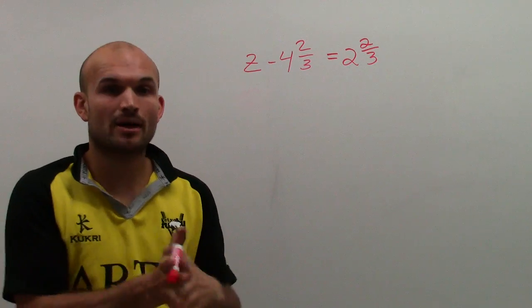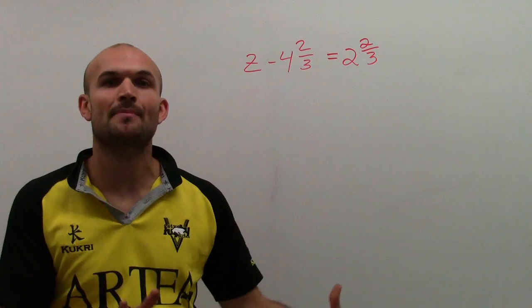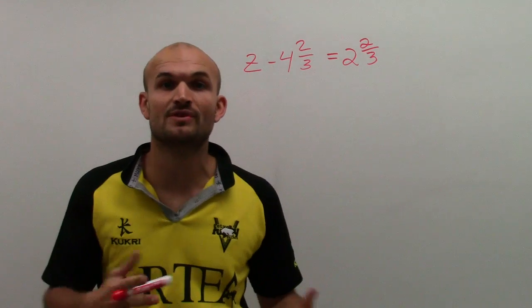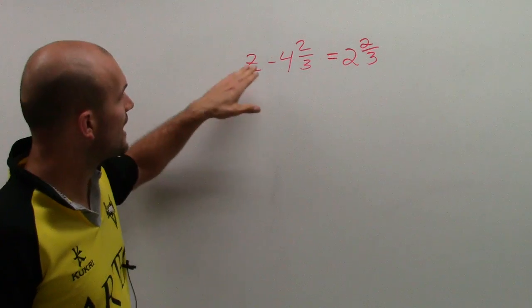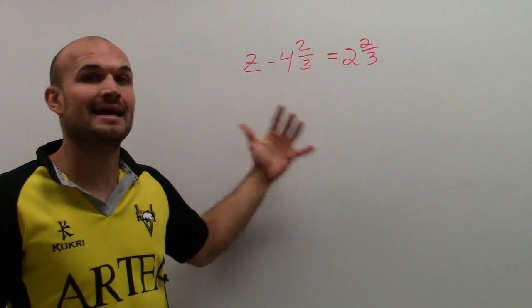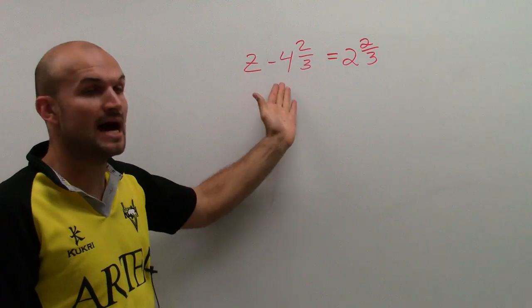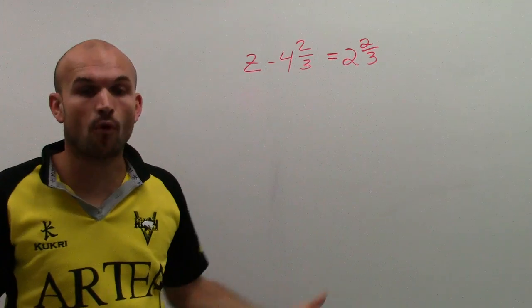It's important for you to understand that no matter what numbers I'm using, the properties or the steps for solving one step equations still remain the same. I look at my variable. I need to isolate it. I need to undo what is happening to my variable. So now I see the operation of subtracting 4 and 2 thirds.